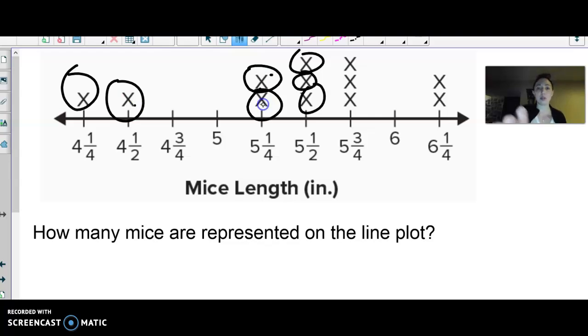All right. Hopefully you got it. We can see there's a mouse. There's a mouse. Each of the X's are mice. So one, two, three, four, five, six, seven, eight, nine, 10, 11, 12 mice.